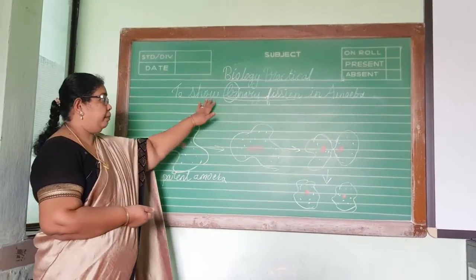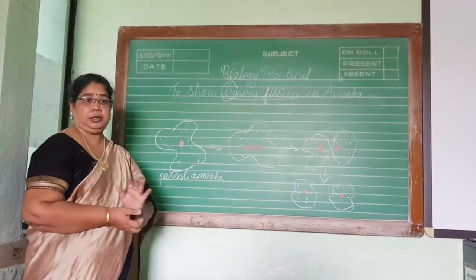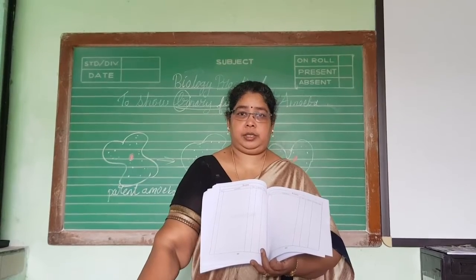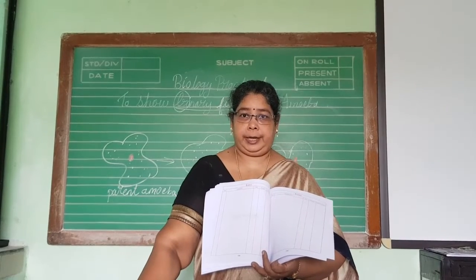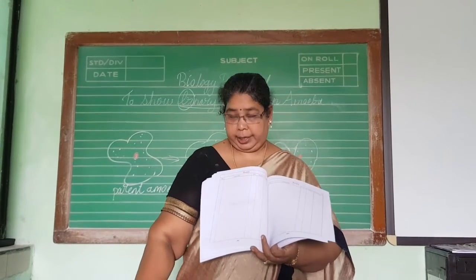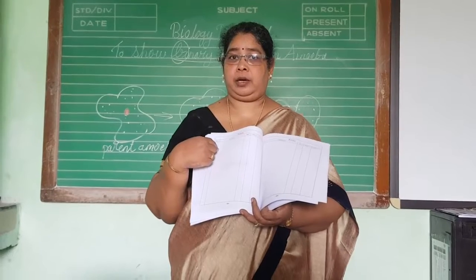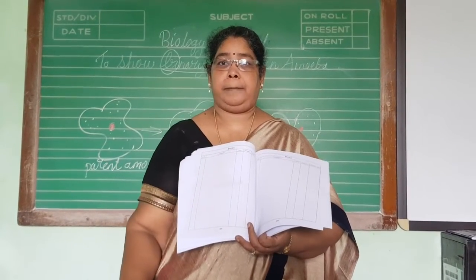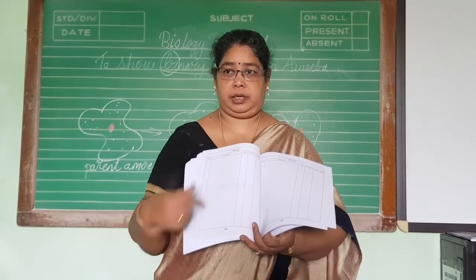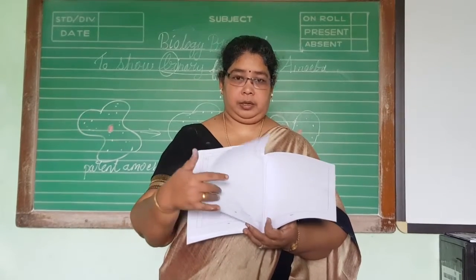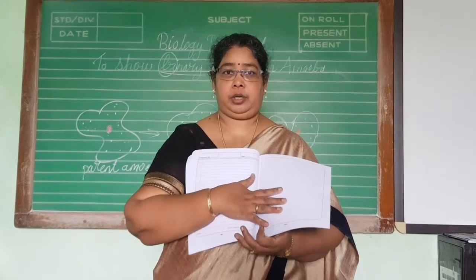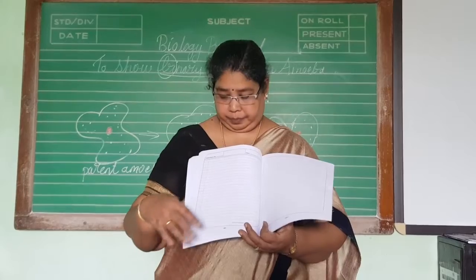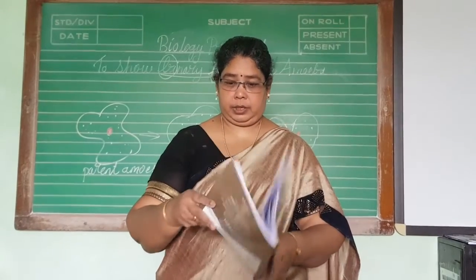For practical exams, we will give you only the aim — the rest of the things you have to learn on your own and complete. Take out your journals and go to the index page. The first experiment we have done is carbon dioxide is given out during respiration. The second one is to show binary fission in amoeba. You have to draw the diagram on the plain page and the other things on the ruled page — I will mark and provide them in the journal.